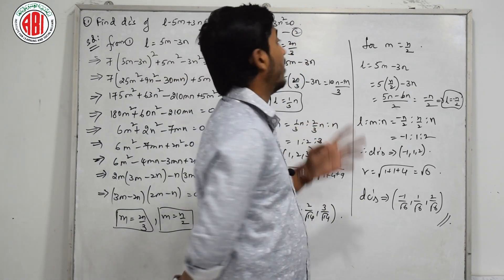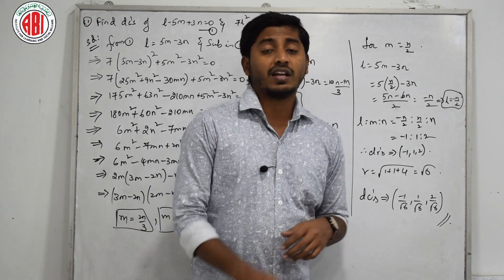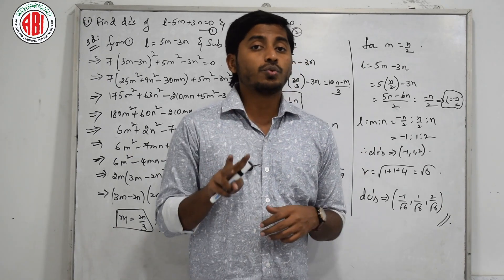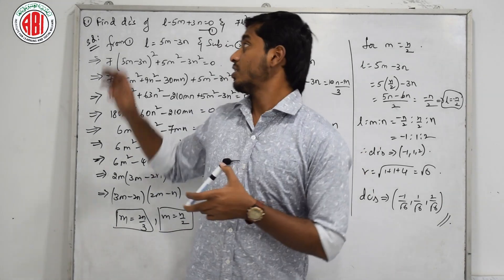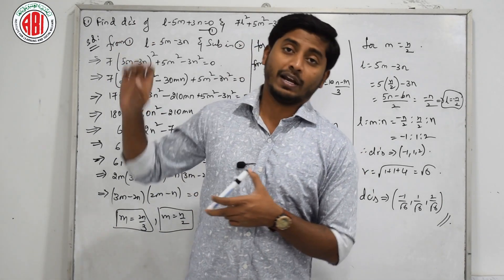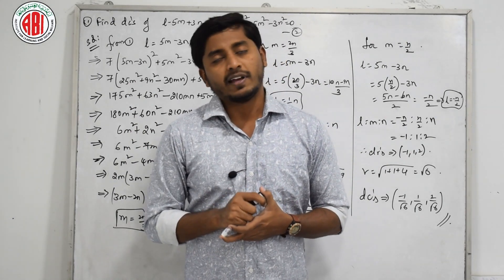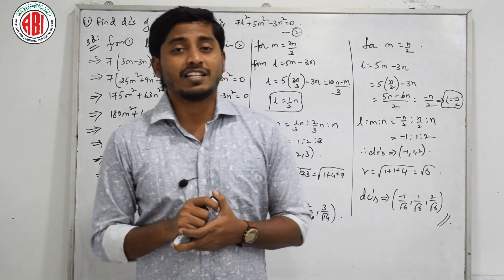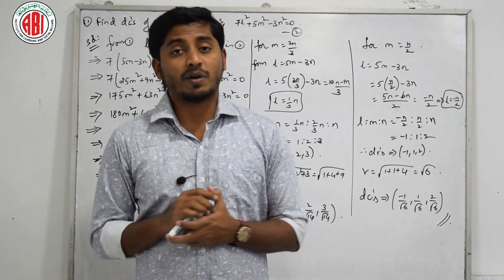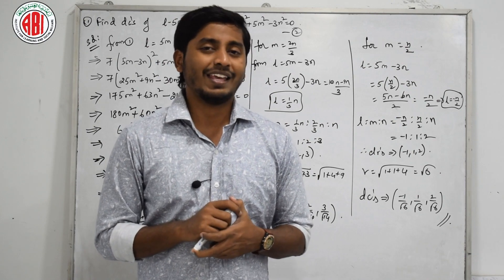This is a question where we find the DCs when two relations are given — the relationship between L, M, and N. Let us move on to the next session with more problems of DCs and DRs. Thank you.